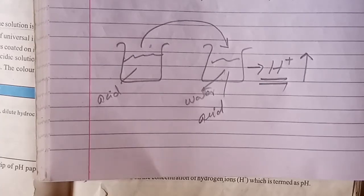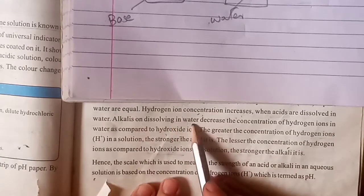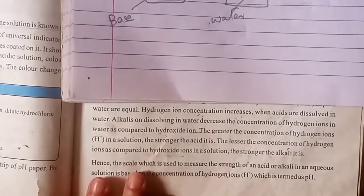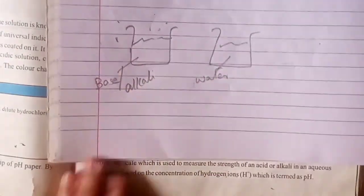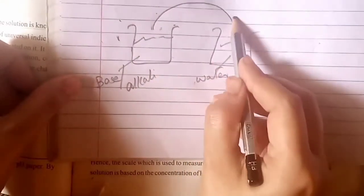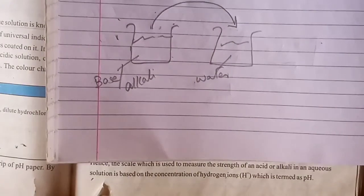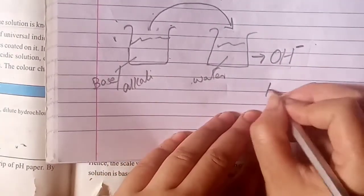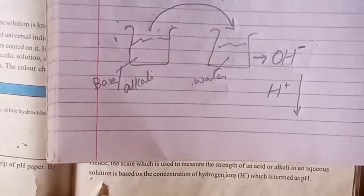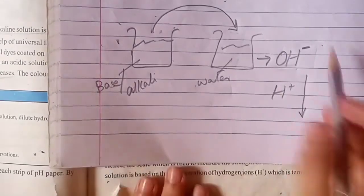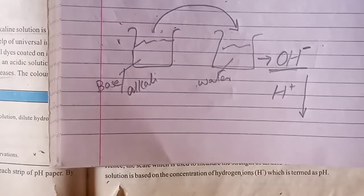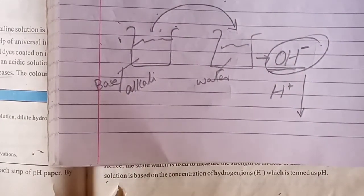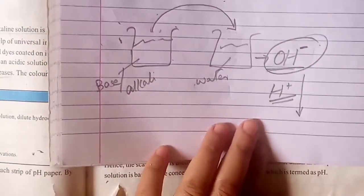Now let's read: alkali, on dissolving in water, decreases the concentration of hydrogen ion in water as compared to hydroxide ion. If I dissolve a base or alkali in water, which concentration will be higher? OH- concentration will be higher and H+ concentration will be lower. Alkali produces OH-, so if you add any base in water, hydroxide ion will be higher.